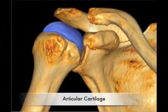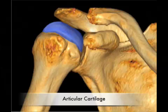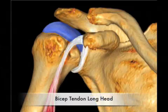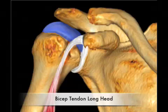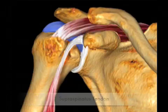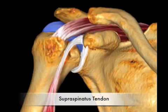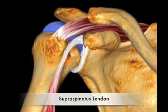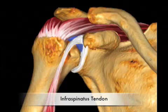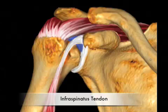We'll begin with a brief anatomy review, starting with the humeral head covered by articular hyaline cartilage, the biceps tendon as it passes through the biceps groove, the supraspinatus tendon as it attaches to the anterior aspect of the greater tuberosity, and the infraspinatus tendon as it attaches to the posterior aspect of the greater tuberosity.